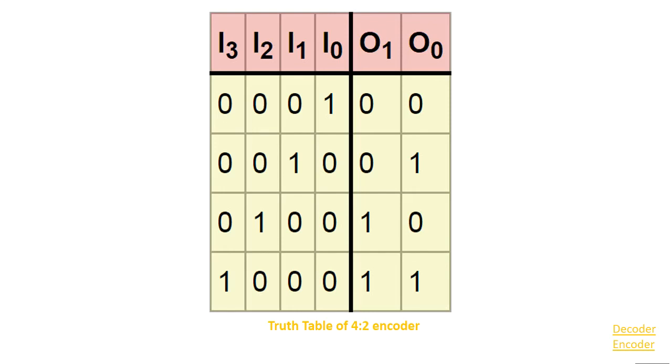As you see guys, we have four inputs and two outputs. As I explained in decoder, we have two inputs and four outputs. Let me start. If we have 0 0 0 1, the outputs will be 0 0. And if i3 is 0, i2 is 0, i1 is 1, and i0 is 0, we have q1 0 and q0 1.